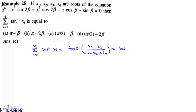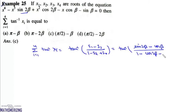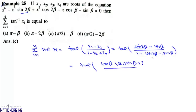It will be tan⁻¹ of: S1 is sin(2β), minus S3 which is cos(β), giving sin(2β) minus cos(β) in the numerator; and 1 minus S2 where S2 is cos(2β), minus S4 which is sin(β), giving 1 minus cos(2β) minus sin(β) in the denominator. We can write sin(2β) as 2·sin(β)·cos(β), then take cos(β) as a common factor. The denominator 1 minus cos(2β) equals 2sin²(β).